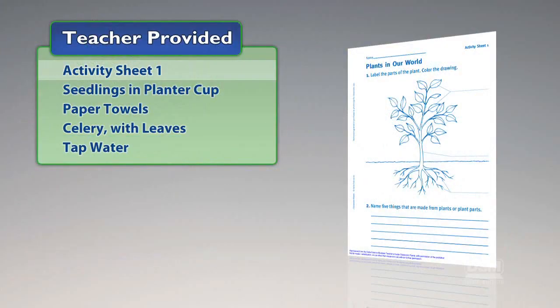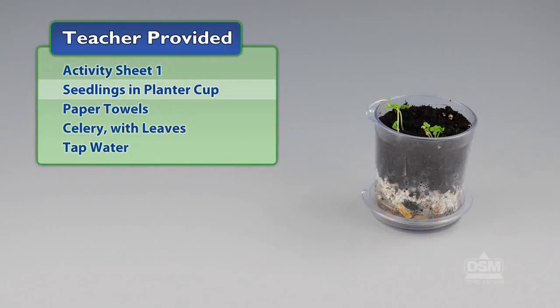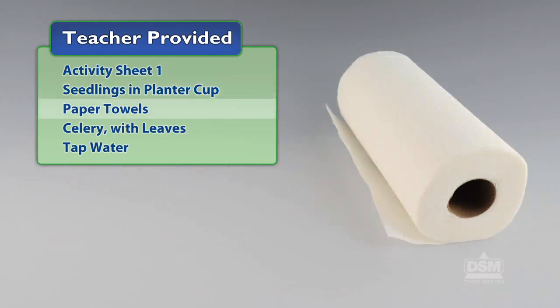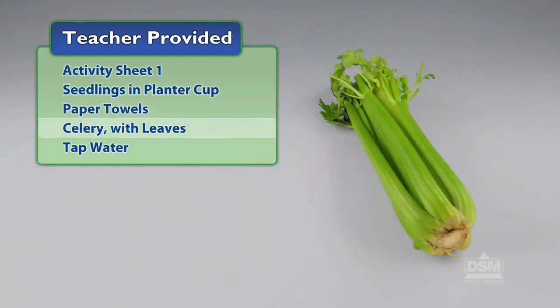You will also need to provide Activity Sheet 1, Seedlings in Planter Cups, Paper Towels, Celery with Leaves, and Tap Water.